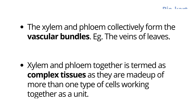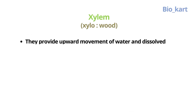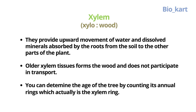These vascular bundles, that is the xylem and phloem together, are also known as complex tissues, as they are made up of more than one type of cells working together as a unit. Now let's talk about the xylem.